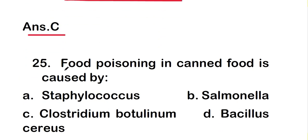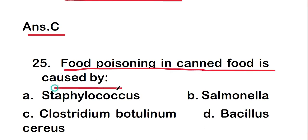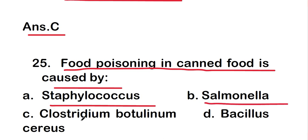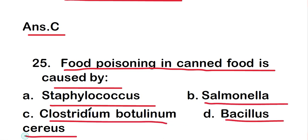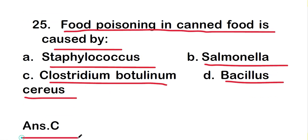Next question: food poisoning in canned food is caused by Staphylococcus, Salmonella, Clostridium botulinum, or Bacillus cereus. The right answer is option C — Clostridium botulinum causes food poisoning in canned food.